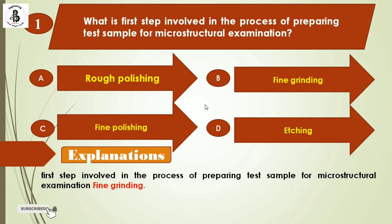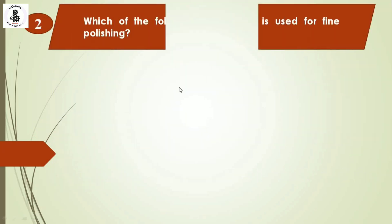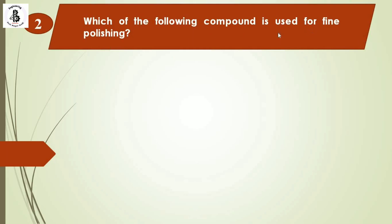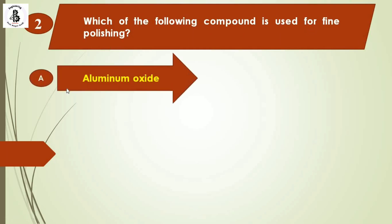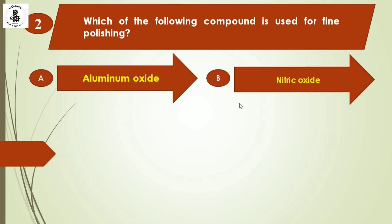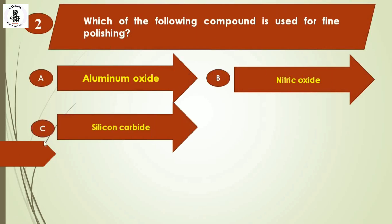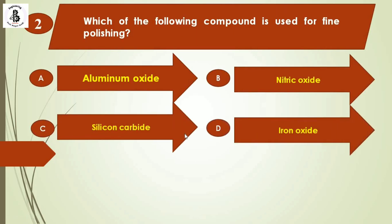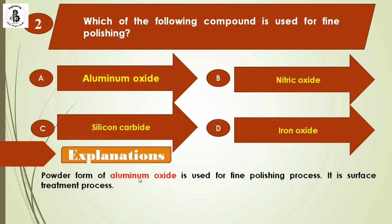Next question: Which of the following compounds is used for fine polishing? Option A: aluminium oxide. Option B: nitric oxide. Option C: silicon carbide. Option D: iron oxide. The powder form of aluminium oxide is used for the fine polishing process and is also used for surface treatment processes. The right answer is option A, aluminium oxide.